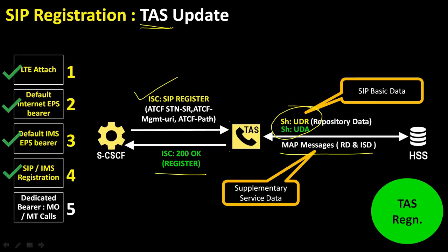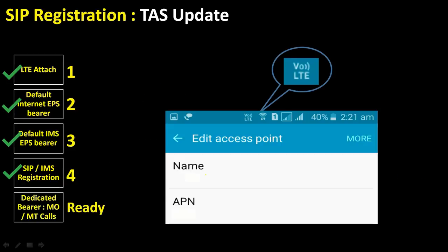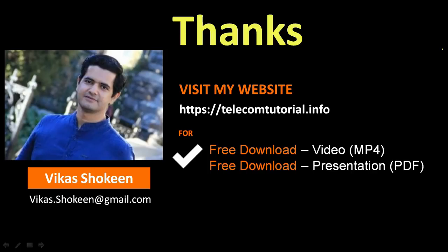This completes the full VoLTE IMS SIP registration procedure. Once all steps are complete, depending on the handset, the user will see the VoLTE symbol on screen. The next video will cover call flows for mobile originating and mobile terminating calls. To download the PPT or video, visit telecomtutorial.info. Please like, comment, share, and subscribe to the YouTube channel for more technical videos.